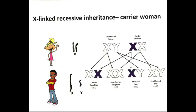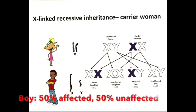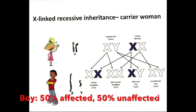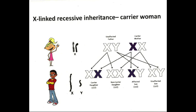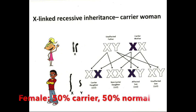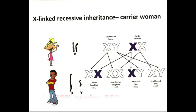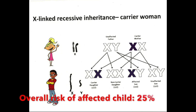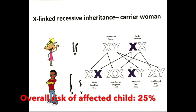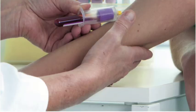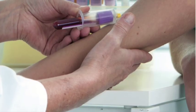If a woman is a carrier of an X-linked disorder, it's helpful to consider the sexes of her potential children to determine the risk separately. If she has a boy, he has a 50% chance of inheriting her normal X chromosome and a 50% chance of inheriting the abnormal copy and getting the condition. If she has a girl, there's a 50% chance of her being a carrier and a 50% chance of inheriting the normal X chromosome. As the chance of having a boy or girl is 50-50, the overall chance of having an affected child with each pregnancy is one in four, or 25%.